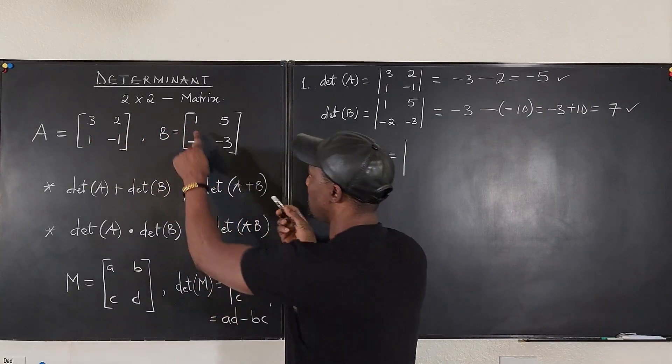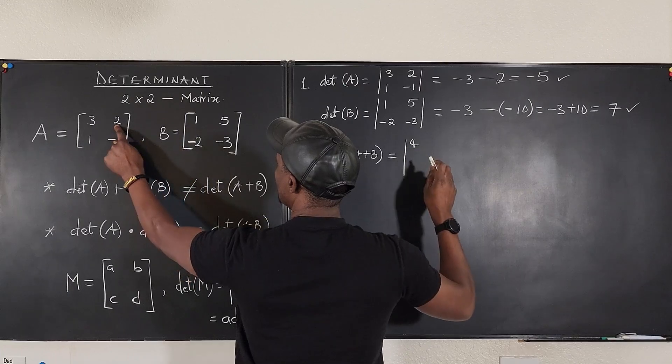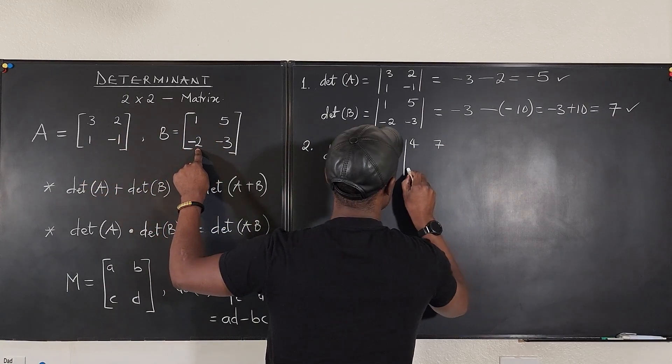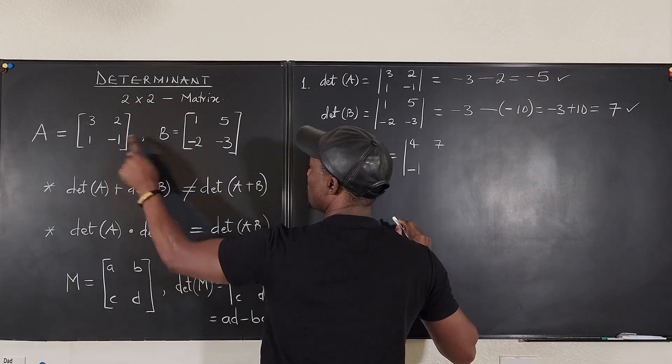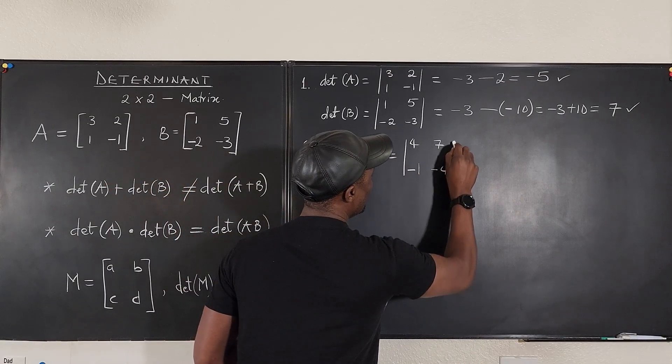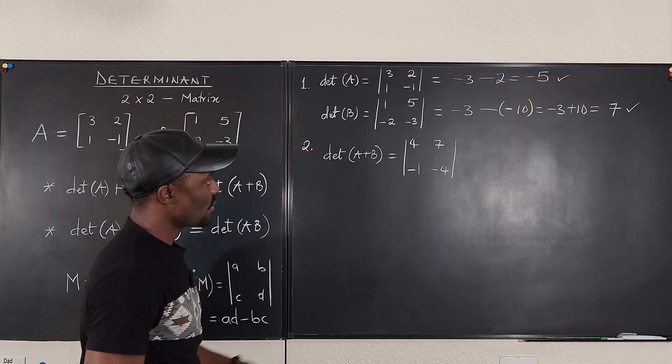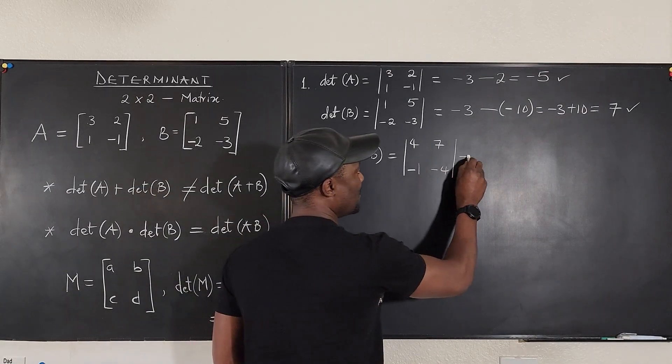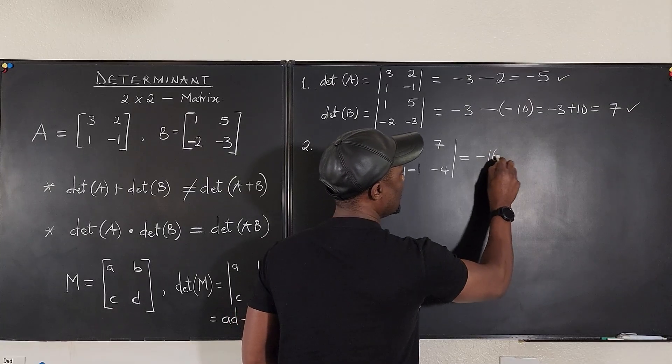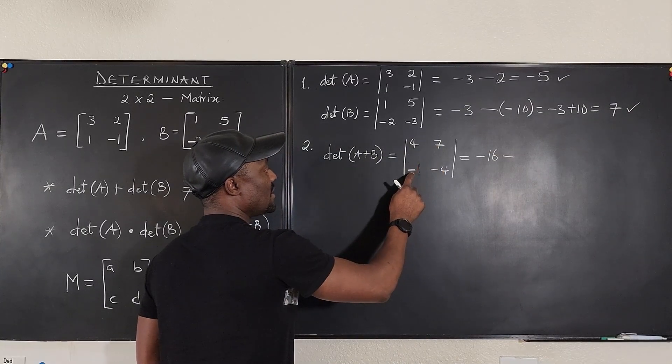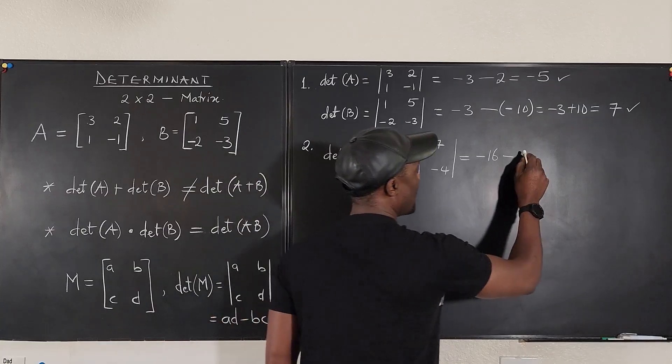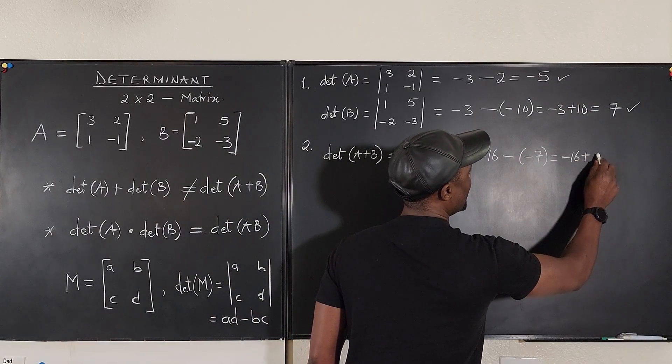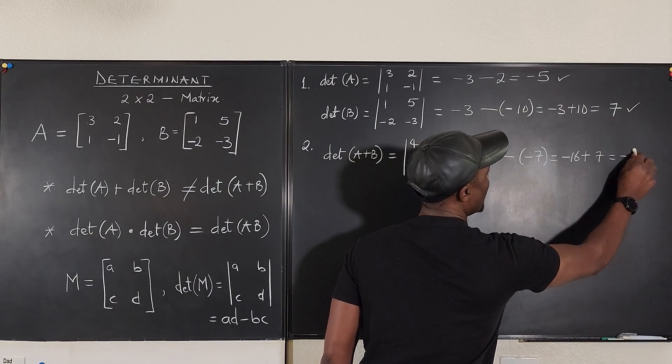...which is going to be 3 plus 1, that gives you 4. 2 plus 5 gives you 7. 1 plus minus 2 gives me minus 1. And minus 1 plus minus 3 gives me minus 4. So what is the determinant of A plus B? The same thing. 4 times minus 4 equals minus 16 minus 7 times minus 1 is minus 7. So this is minus 16 plus 7, which is minus 9.